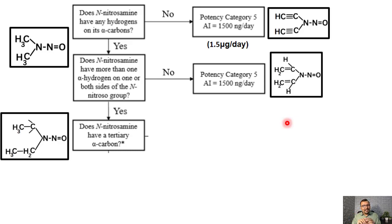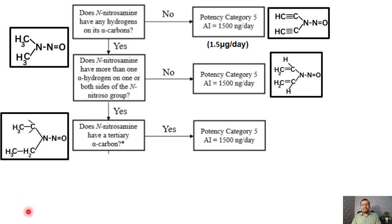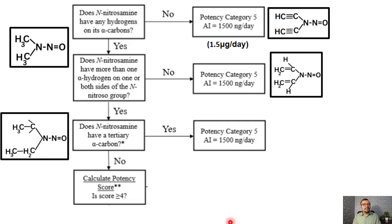The next question is: does your nitrosamine have a tertiary alpha carbon? A tertiary alpha carbon is a carbon connected to three different carbon atoms. If the alpha carbon is tertiary, the compound is again assigned potency category 5, and an acceptable intake of 1500 nanograms per day applies. If the alpha carbon is not tertiary, you must calculate the potency score — which we will discuss shortly.